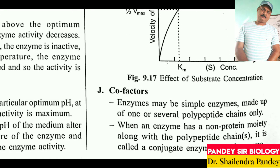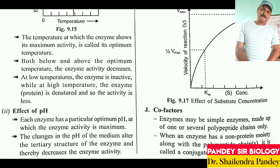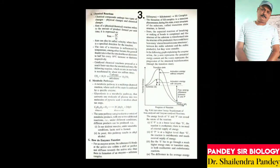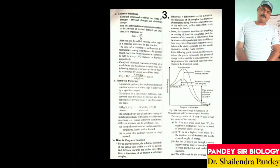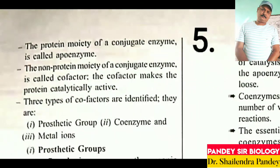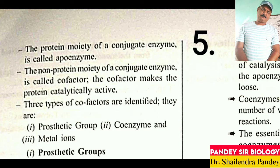Now let's look at co-factors. Enzymes may be simple enzymes made up of one or several polypeptide chains only. When the enzyme has a non-protein component along with the polypeptide chain, it is called a conjugate enzyme or holoenzyme. The protein part of a conjugate enzyme is called apoenzyme. The non-protein part is called co-factor. The co-factor makes the protein catalytically active.